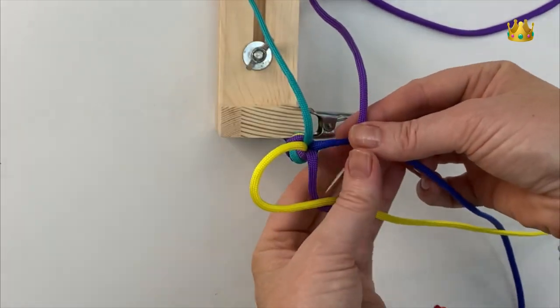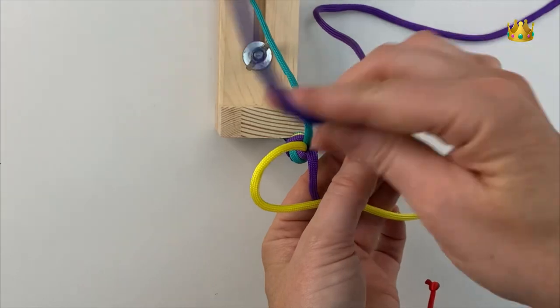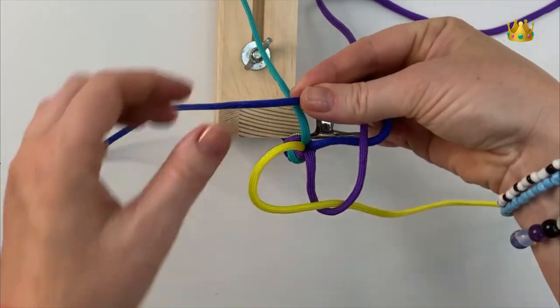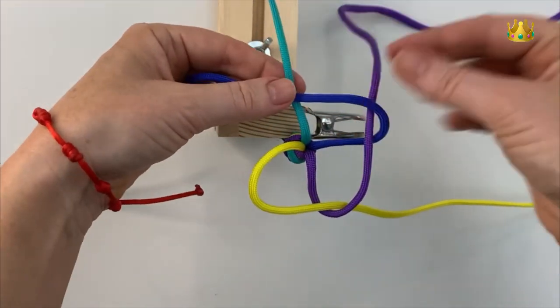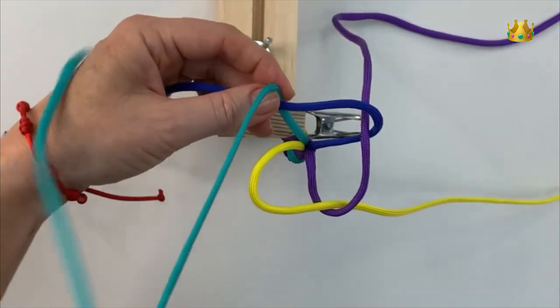Blue cord around to the right and over the green cord and the green cord around to the right to come over the yellow cord.